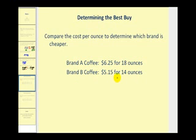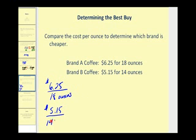So let's go ahead and write our rates, and then determine the unit rates. The first rate would be $6.25 per 18 ounces, and brand B would be $5.15 per 14 ounces. So we'll rewrite these as unit rates, so the denominator will be one ounce in both cases.